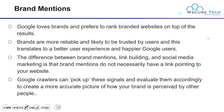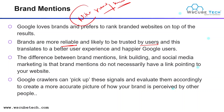Next, we have brand mentions. Google loves brands and prefers to rank branded websites at the top of results. Brands are most reliable because of good quality and are likely to be trusted by users. For example, if someone searches 'running shoes' as a generic keyword, but others search 'Nike running shoes,' Nike is a brand that people trust because of its quality and experience. The difference between brand mentions, link building, and social media marketing is that brand mentions do not necessarily have a link pointing to your website. Google crawlers can pick up these signals and evaluate them to create a more accurate picture of how your brand is perceived.